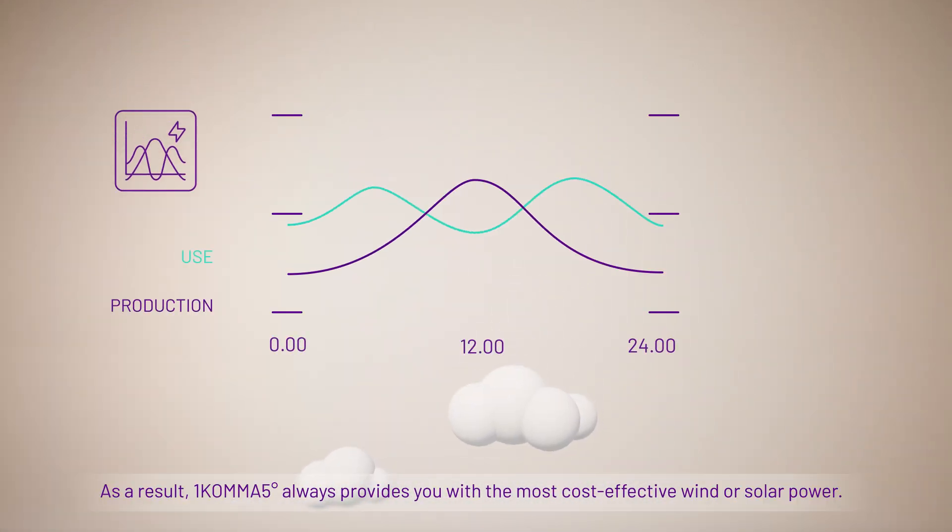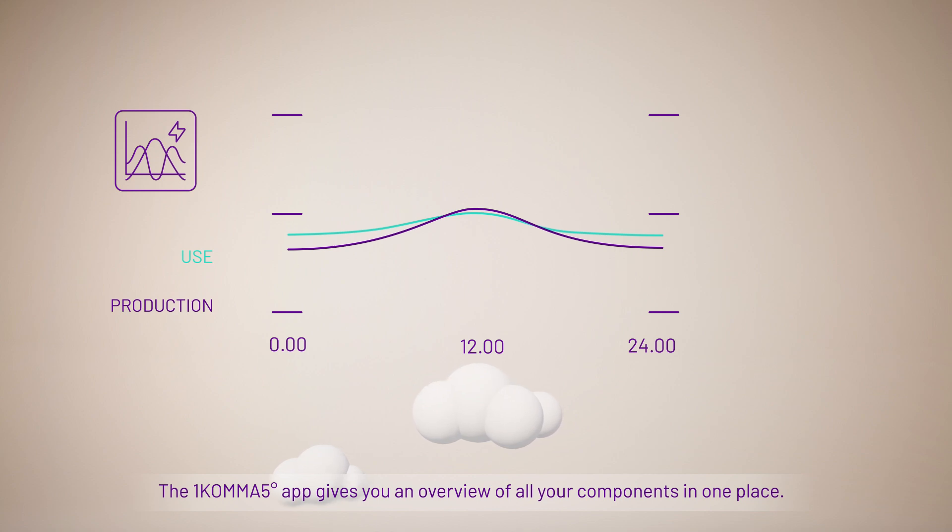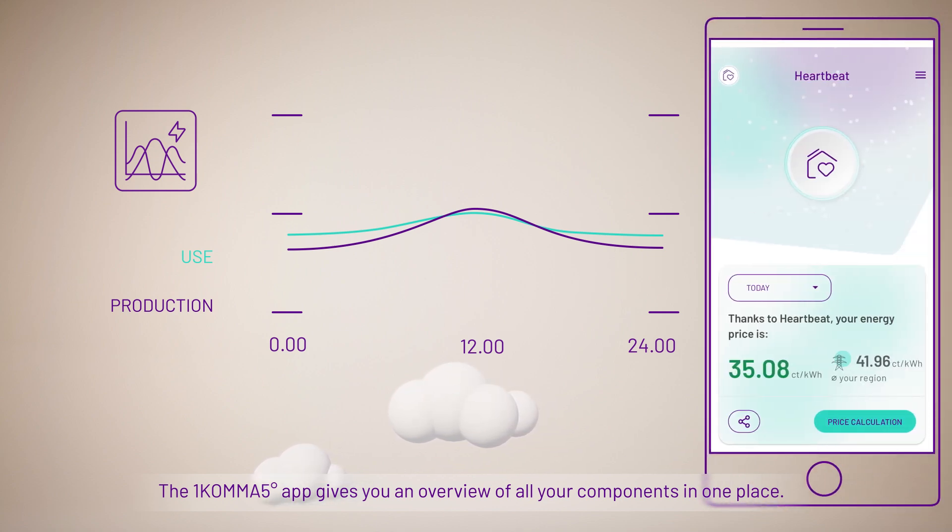As a result, 1.5 always provides you with the most cost-effective wind or solar power. The 1.5 app gives you an overview of all your components in one place.